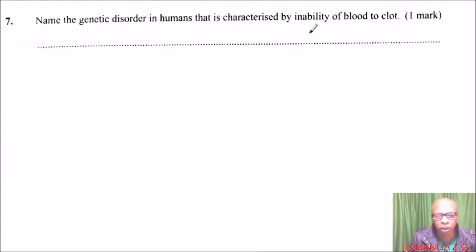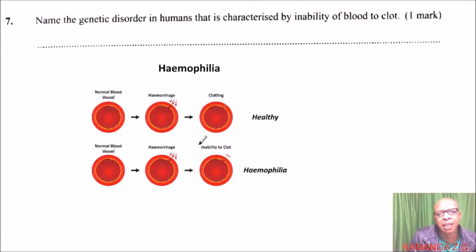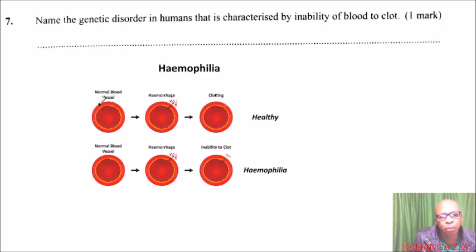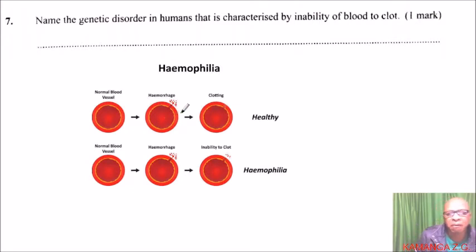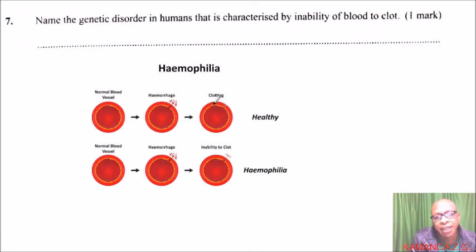The disorder that makes blood unable to clot is called hemophilia. To explain further using a diagram: this is a normal red blood cell, and this is a cell that has been injured, which we call hemophage. The clotting takes place at that section where the blood is coming out.